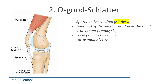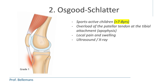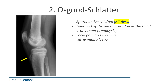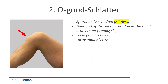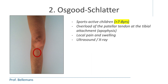Osgood-Schlatter occurs in sports-active children, usually from the age of 7 to 8 years. It is an overload problem of the patellar tendon at the tibial attachment, which we call the apophysis. The overload is caused by prolonged and intensive quadriceps contractions, which are transmitted over the kneecap to the patellar tendon and its insertion on the tibial apophysis, creating traction and overload there. The consequence is local pain and inflammation (grade 1), and if the overload continues, leading to some separation of the apophysis (grade 2), which is easily visible on a radiograph. This condition causes local pain at the insertion of the patellar tendon, located somewhat under the knee.